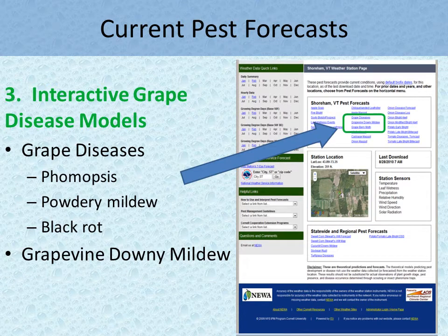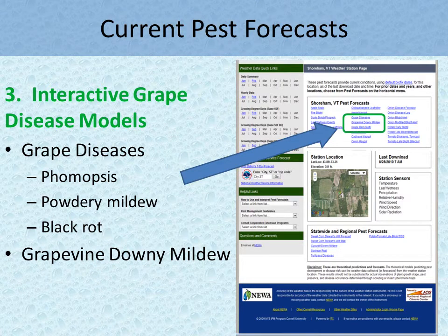Examples of the pest forecasts available are the Grape Disease model, which gives you a risk prediction for powdery mildew, phomopsis, and black rot, and also the downy mildew model.